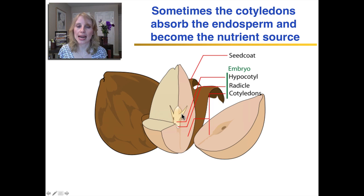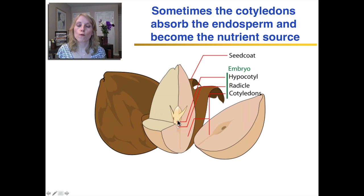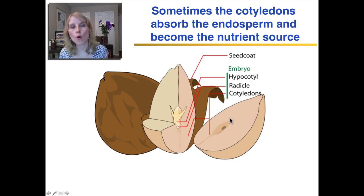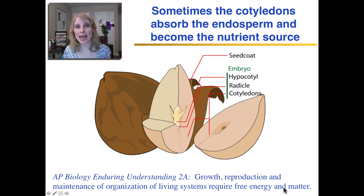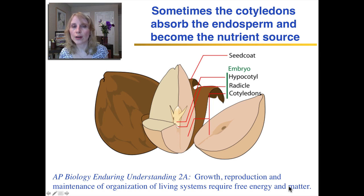Here's an avocado seed where that happens — here's the little hypocotyl and the radicle, and then these two big lobes are the cotyledons. They provide the nutrients for the developing seedling when it germinates, up until the point when it can do photosynthesis and make more energy and nutrients. The growth of an organism requires free energy and matter, and to really understand how an organism functions, you need to know where its energy and nutrients come from.